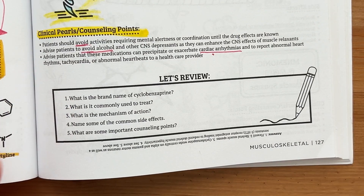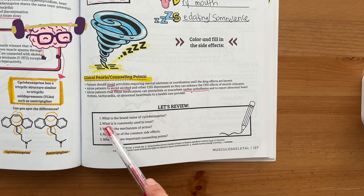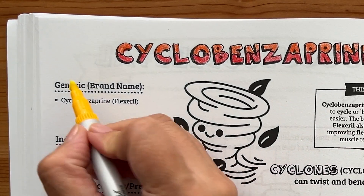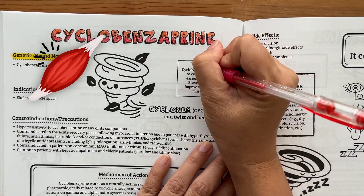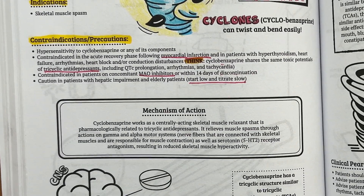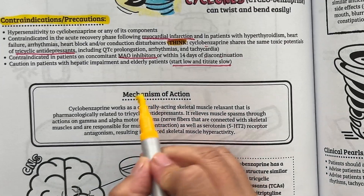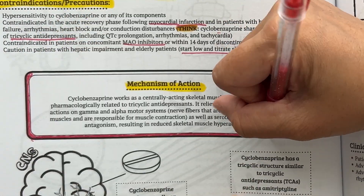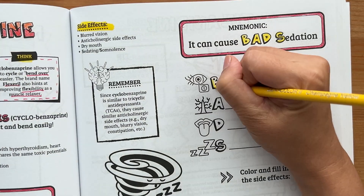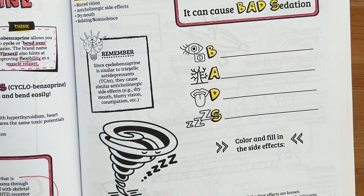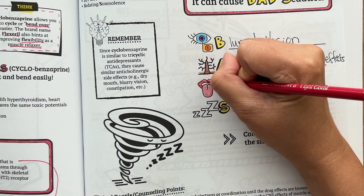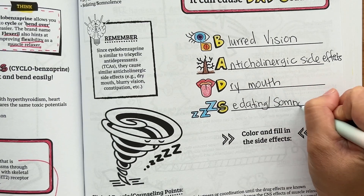Before we end, let's move this information from our short-term memory into our long-term memory by doing some repetition and review. The brand name of cyclobenzaprine is Flexeril, which hints at the indication as a skeletal muscle relaxer, improving flexibility and decreasing muscle spasms. It works as a centrally acting skeletal muscle relaxant through actions on gamma and alpha motor systems, as well as serotonin receptor antagonism. Common side effects — remember the mnemonic BAD SEDATION: B is for blurred vision, A is for anticholinergic side effects similar to TCAs, D is for dry mouth, and S is for sedation or somnolence.